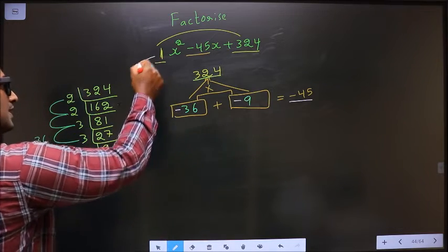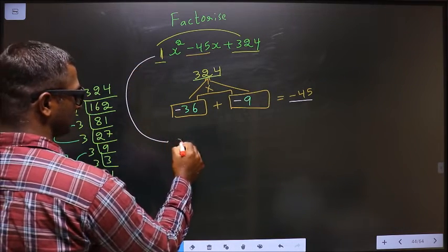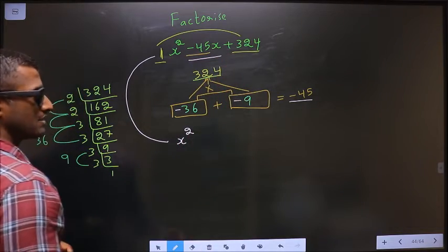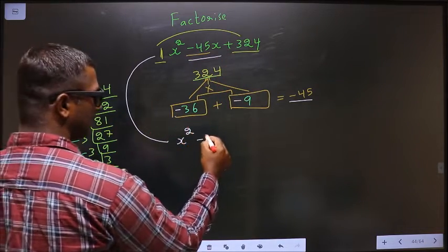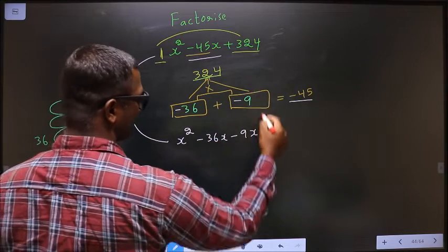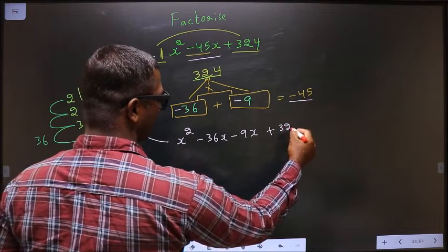Now this will change to: in place of minus 45x, I write minus 36x minus 9x plus 324.